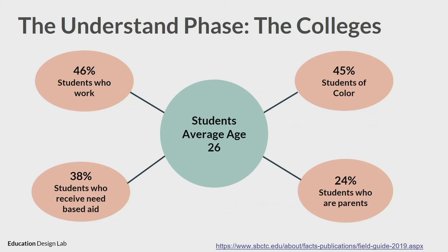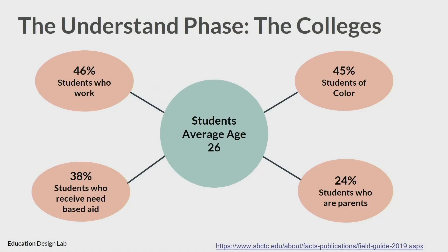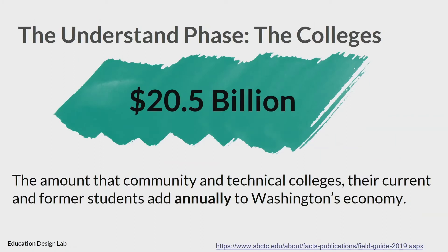45% of your students are students of color. 38% of your students receive some sort of need-based aid to fund their education. And 25 — or 24% — of your students are parents. These are things that we know, not only about the colleges, but also about the students who are attending your institutions. So we continue to build upon what it is that we know. $20.5 billion is the amount that the community and technical colleges, their students and former students, add annually to Washington's economy. $20.5 billion is coming from the work you're doing annually to this economy — I think that's important as we ground ourselves in why this is so important.